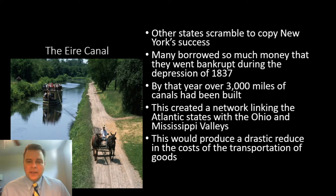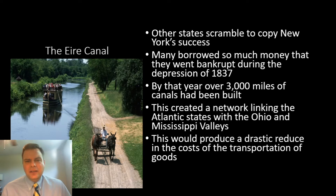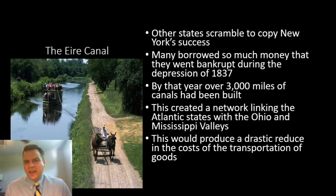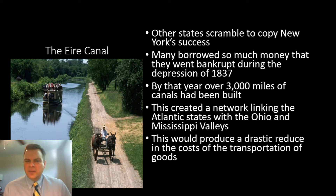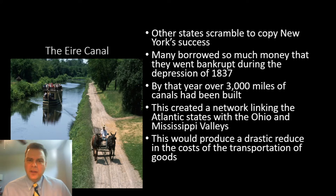These canals created a network linking the Atlantic states with the Ohio and Mississippi River Valleys, so farmers could transport goods up and down the canals at a faster rate. Before, on old roads, goods like perishable farm products would ruin before reaching market. Now, with canals, goods could reach market at a quicker rate.